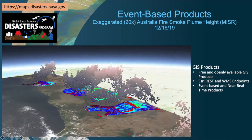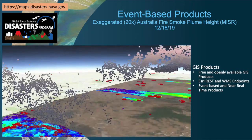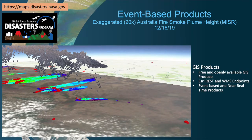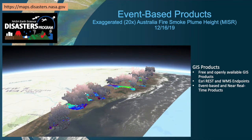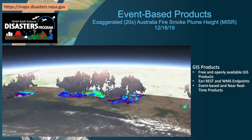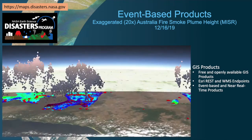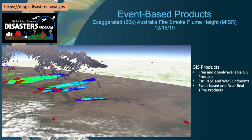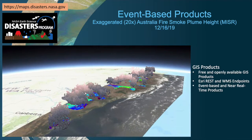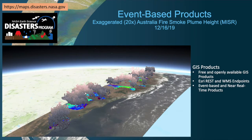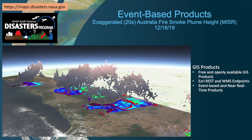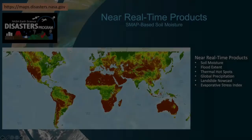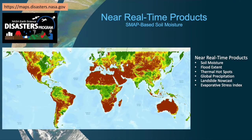The Disasters Program area of NASA's Applied Sciences program improves the prediction of, preparation for, response to, and recovery from hazards and disasters around the world. The Disasters team coordinates with decision-makers and local governments providing actionable data to recover from disaster impacts and build resilient communities. The team also creates event-based products, such as a map of wildfire smoke plume heights for the Australian bushfires, produced by the multi-angle imaging spectroradiometer, or MISR team, using different camera angles from the satellite.